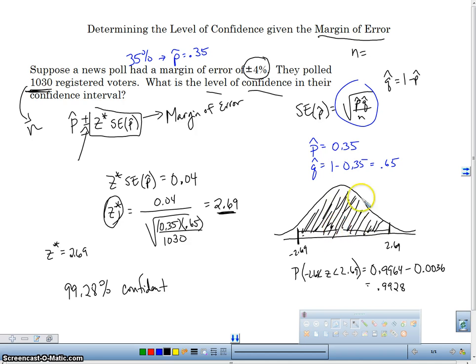And then we're going to find the probability using our normal model that z is between positive, negative, 2.69. And that will give us our level of confidence right in here. And in this case, it was 99.28%. So that's how we determine the level of confidence given our margin of error and our p hat.